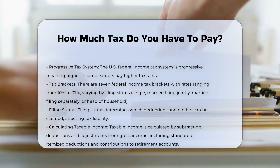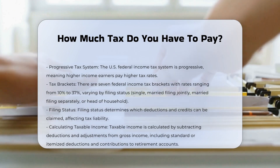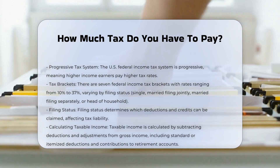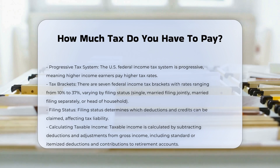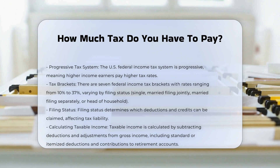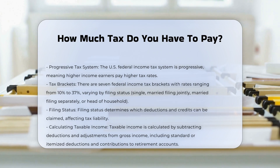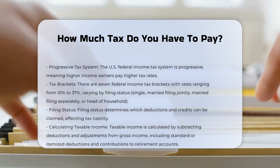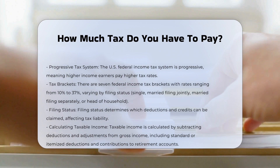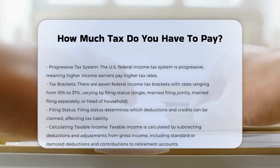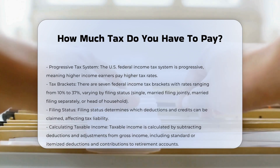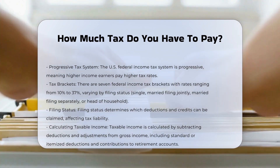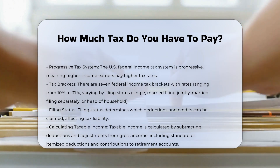Tax brackets: The U.S. currently has seven federal income tax brackets, with rates ranging from 10% to 37%. These brackets vary based on your filing status, which can be single, married filing jointly, married filing separately, or head of household.